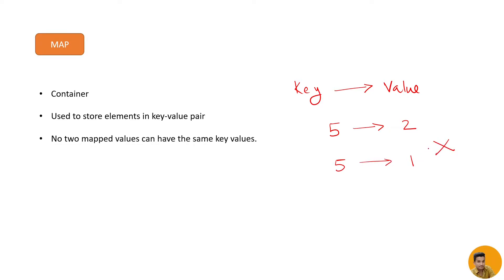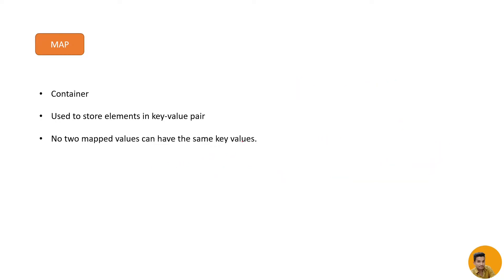Now if I say again 5 mapping to 1, this is not possible. You can't have two keys with the same key value. So no two mapped values can have the same keys. Also, maps store keys in ascending order by default — they are stored in sorted order.